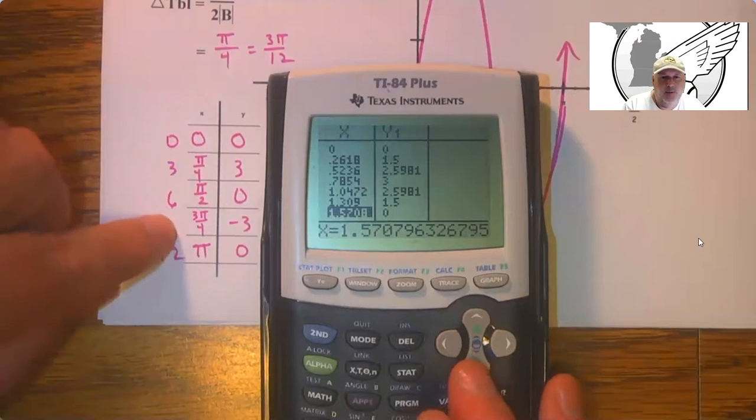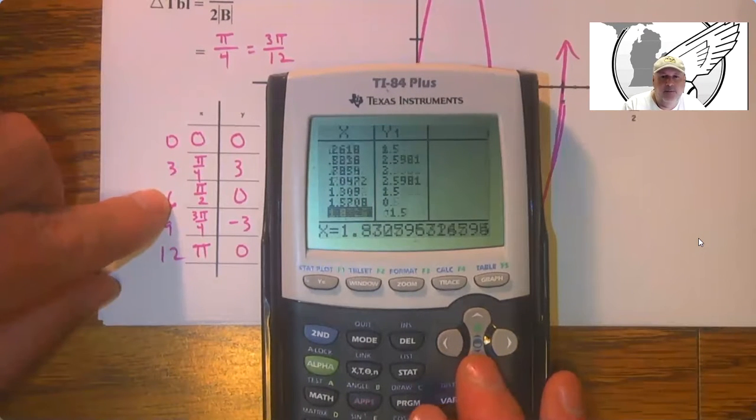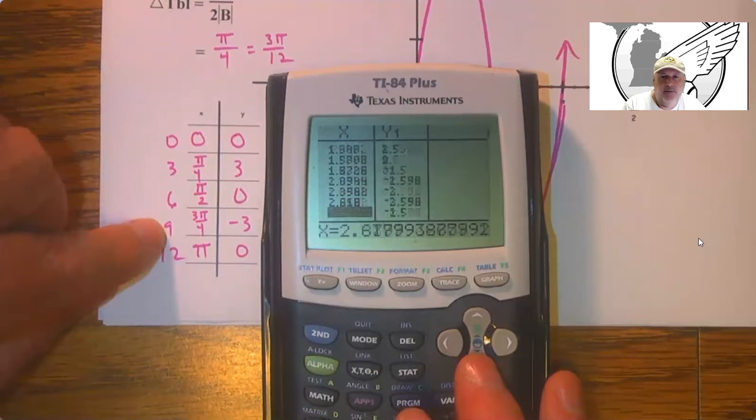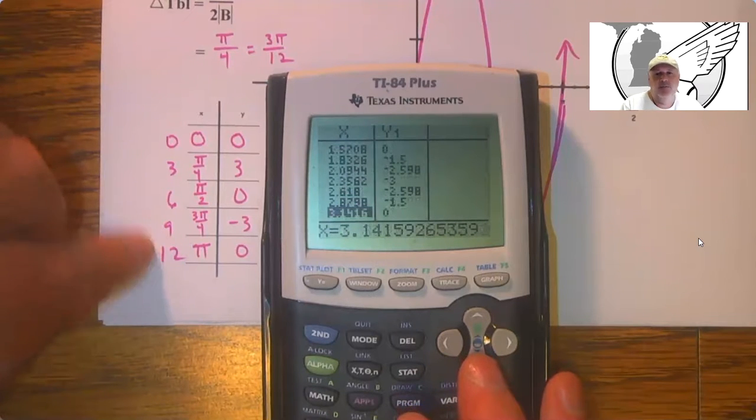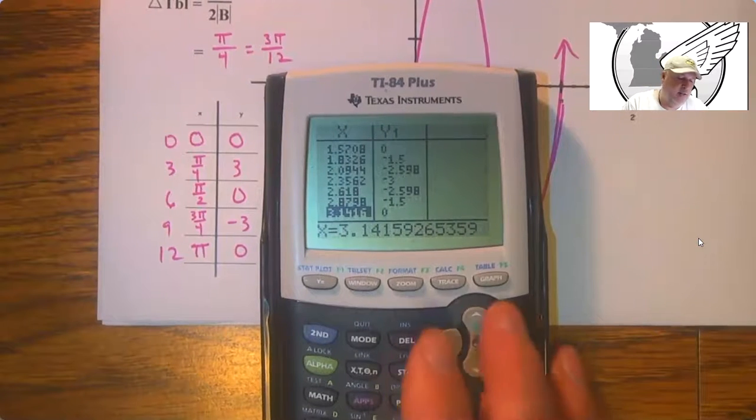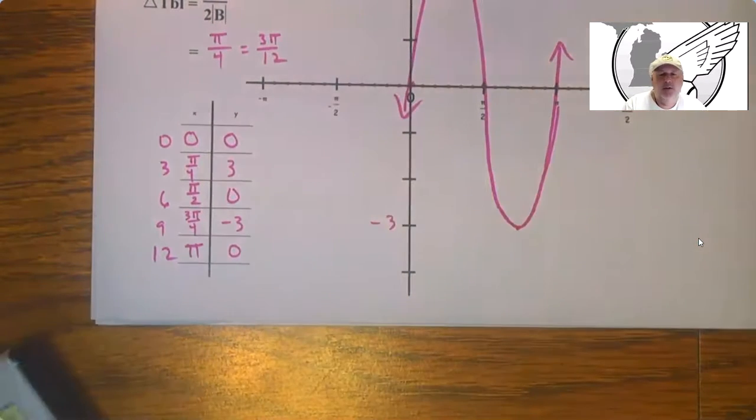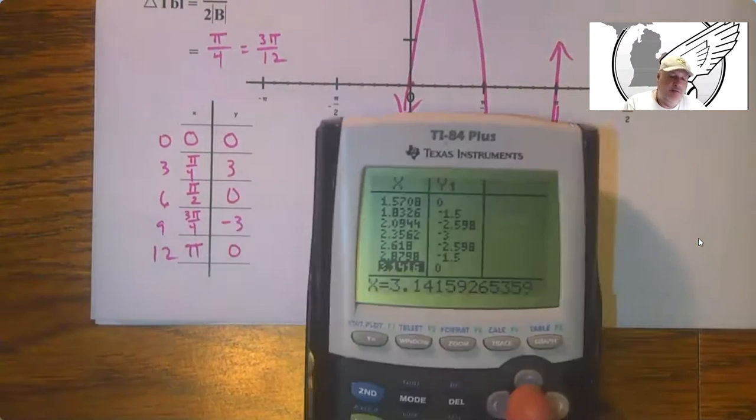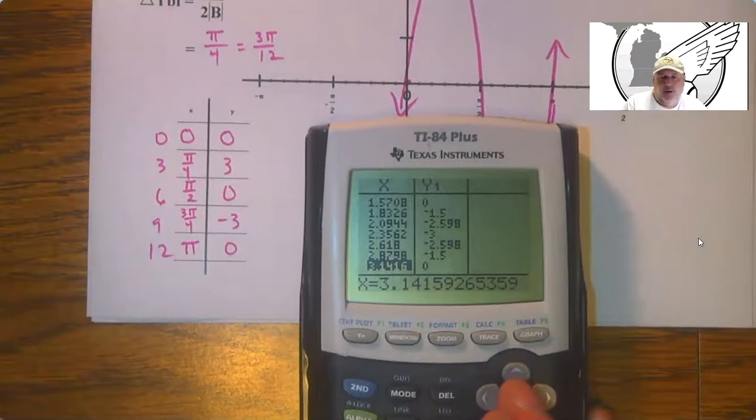So it's actually doing the π over 2. 7, 8, 9, 10, 11, 12. So you can get it to work, but you got to set your delta table by π over 12 and be in radians mode.